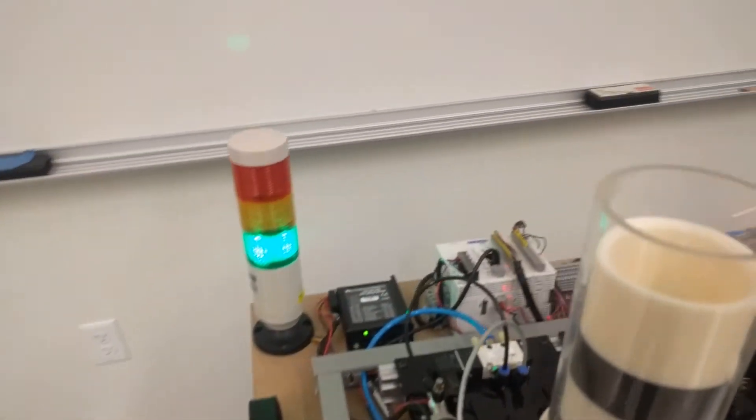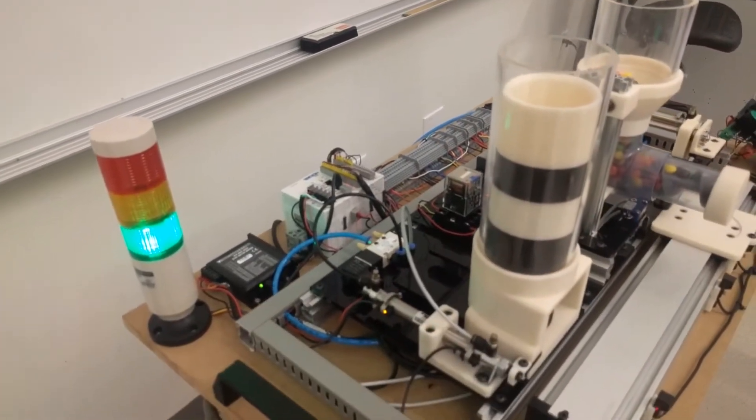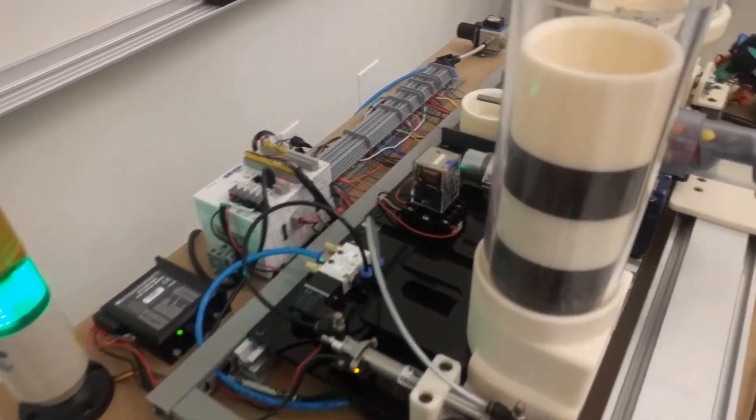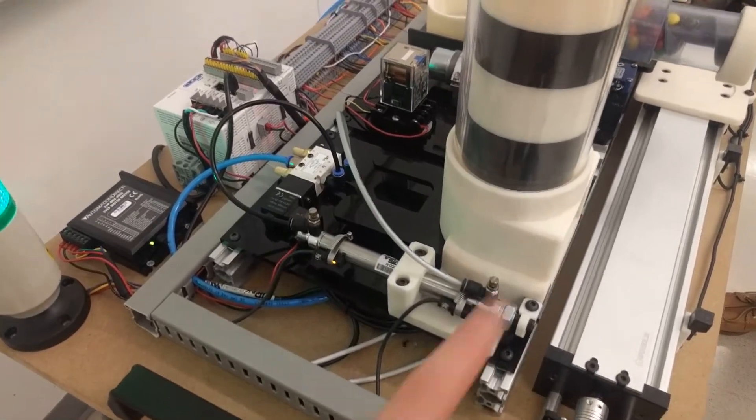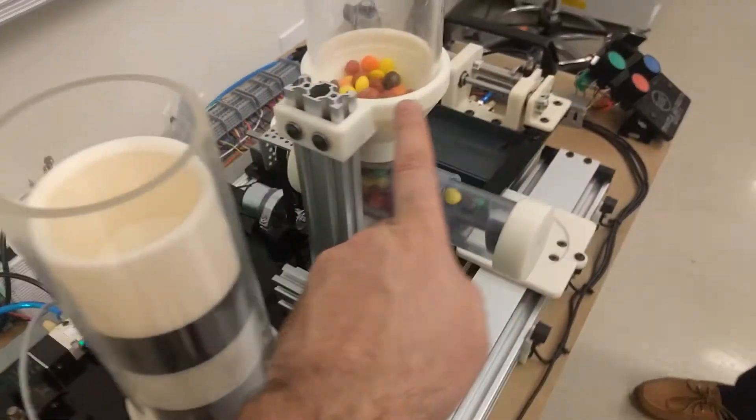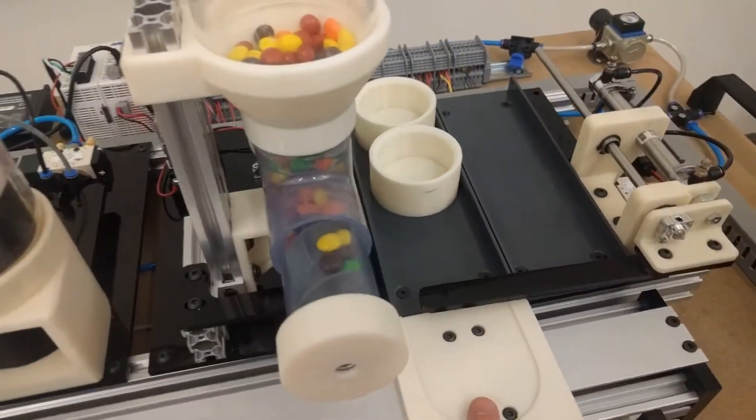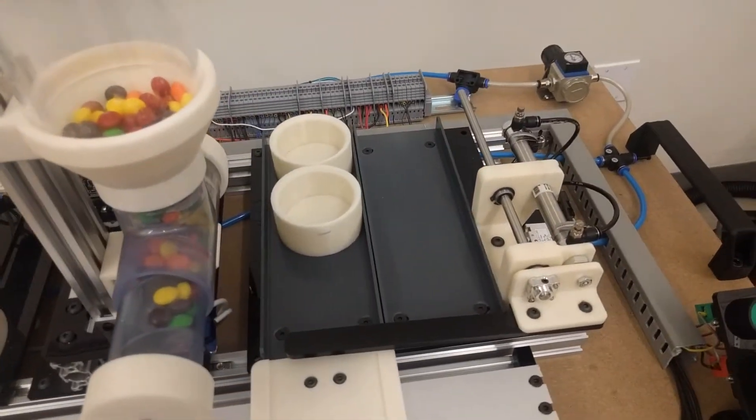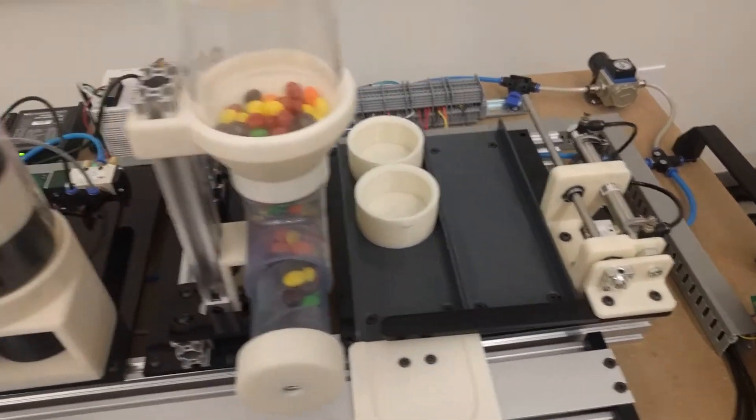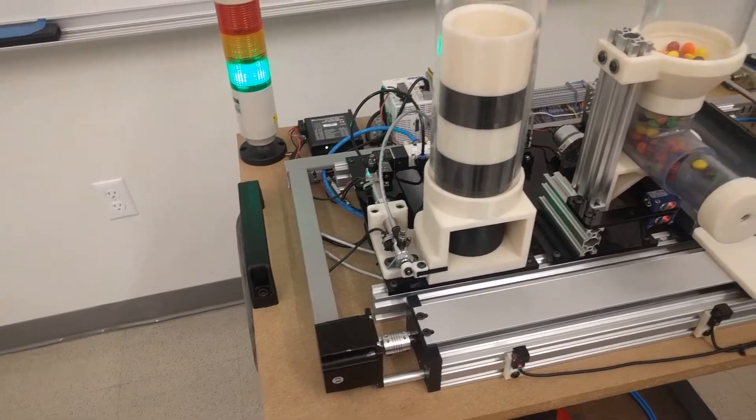But we ordered an awful lot of parts from Automation Direct. These cream parts, wherever you see them, are all made in our 3D printer. So we have a lot of 3D printed parts. Everything is off the shelf or 3D printed.